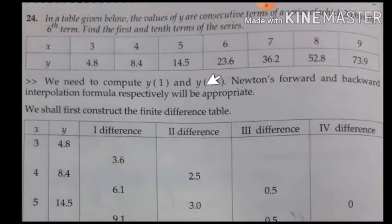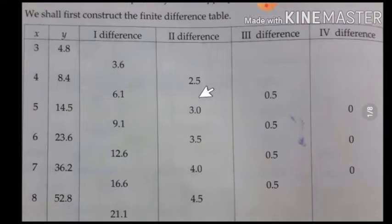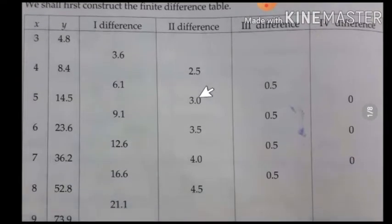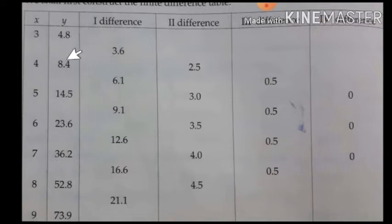First, form a difference table. Construct a difference table by writing the given x values, y values, and then the first difference column. The first difference is obtained by subtracting consecutive y values: 8.4 minus 4.8, then the second value of y minus the first value of y.